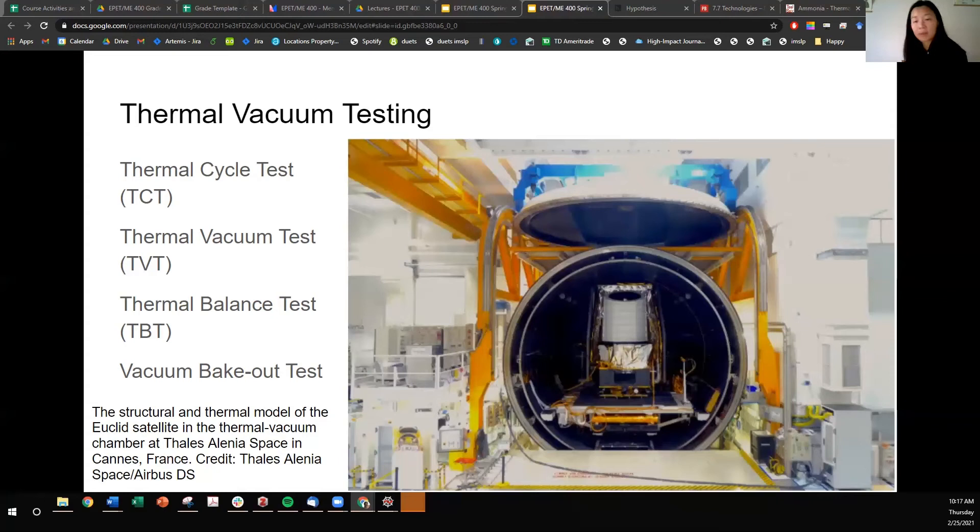Then finally, the vacuum bakeout test. The spacecraft is exposed to high temperature in a high vacuum environment during a determined time to simulate their outgassing. This test is executed to subsystem or system levels. Space simulation chambers are used to perform this type of test.